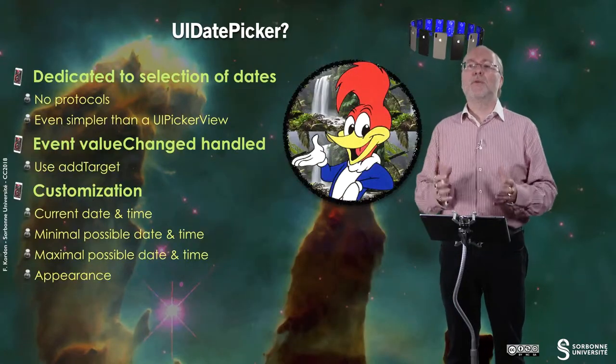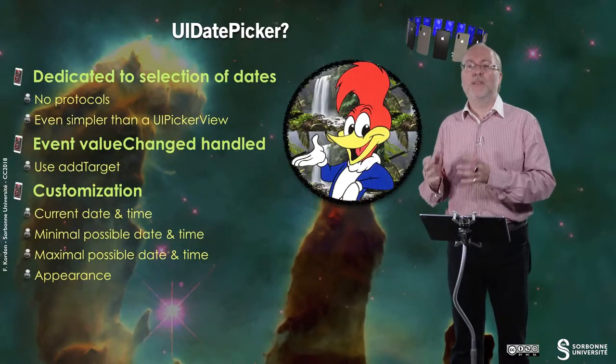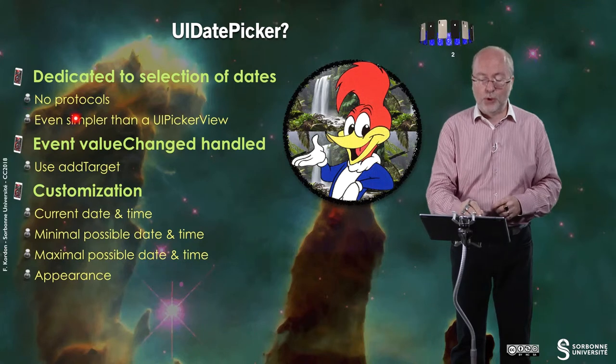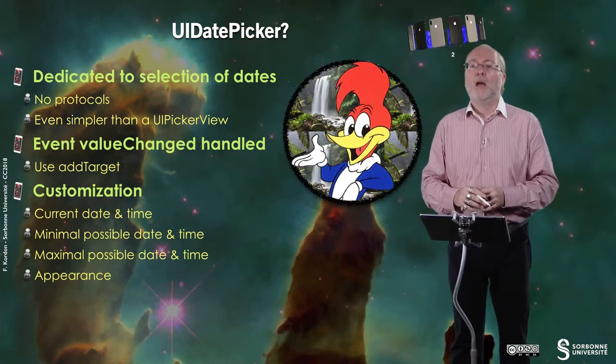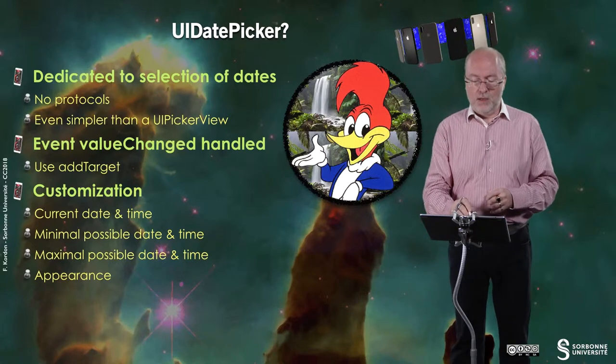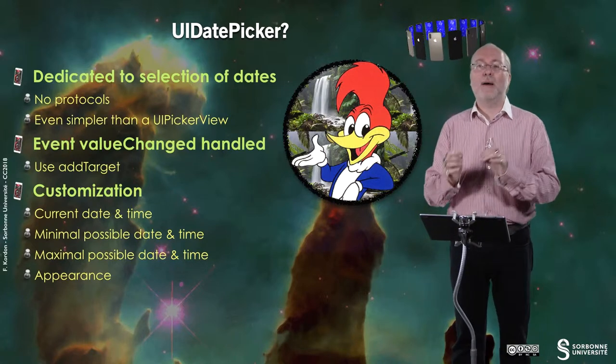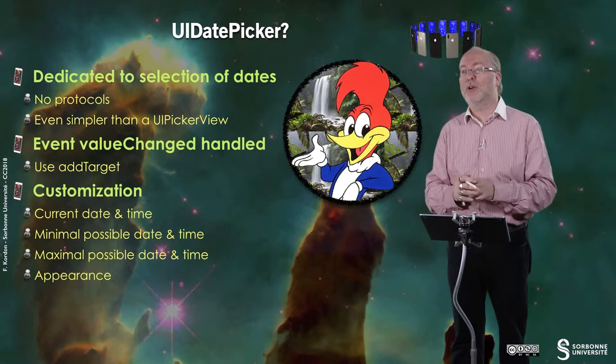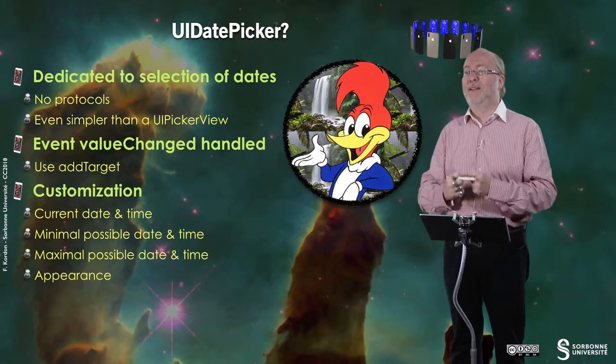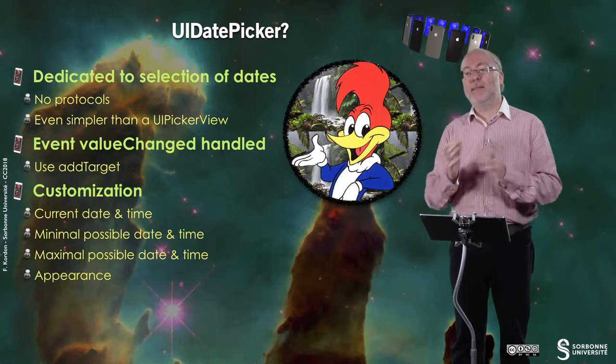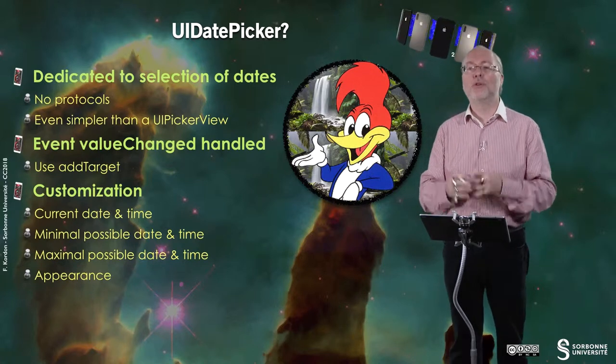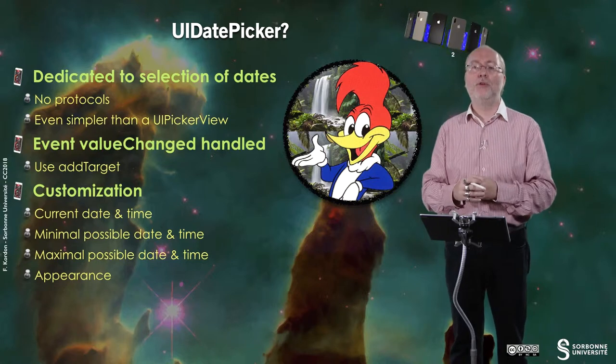A UI Date Picker is an object dedicated to the selection of dates. It's a simplified version of a UI Picker view and so it has no protocol, so it's much simpler to use. The value-changed event is handled by this UI Date Picker, so you get called back by using addTarget and associating the function you want to the UI Date Picker.